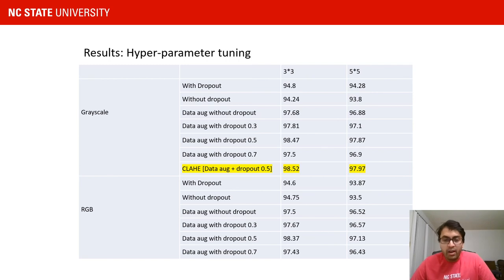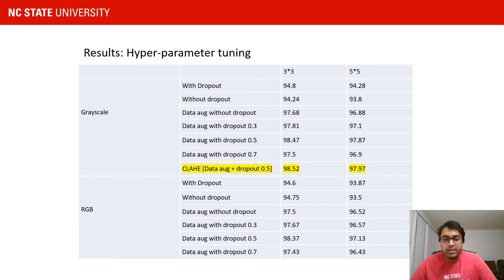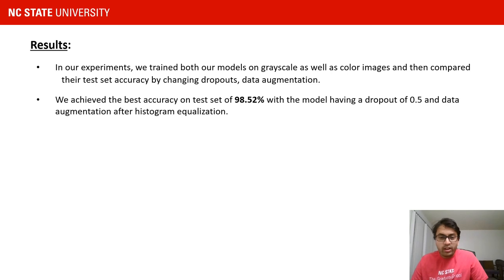Coming to the results from each of our models, we experimented with a whole lot of configurations such as grayscale and RGB, and for each, we experimented with and without dropout, adding data augmentation, varying the dropout percentage, histogram equalization, and so on. Finally, we realized that the best model used a 3x3 kernel size for the convolution layers with histogram equalization, along with data augmentation and a dropout of 0.5. The best model gave us an accuracy of about 98.5% on the test set, which is about 4.3% better than the baseline model.